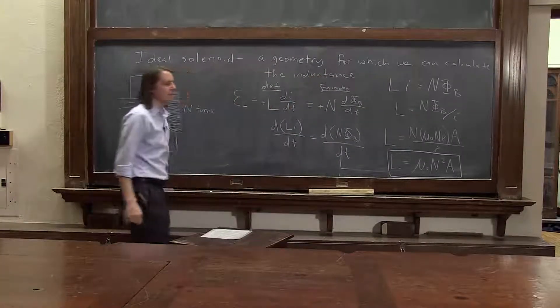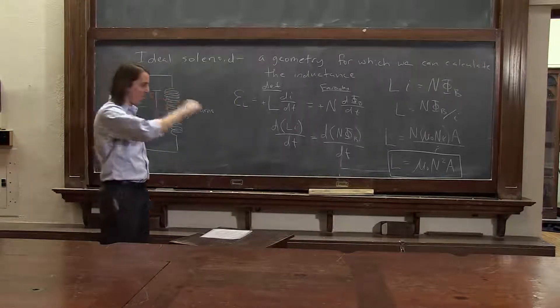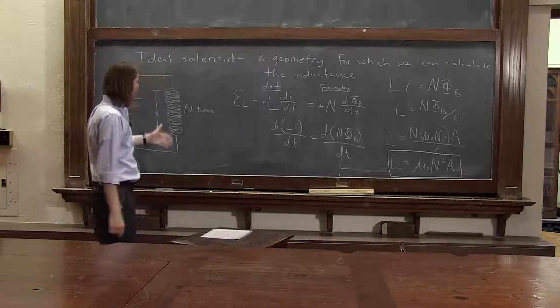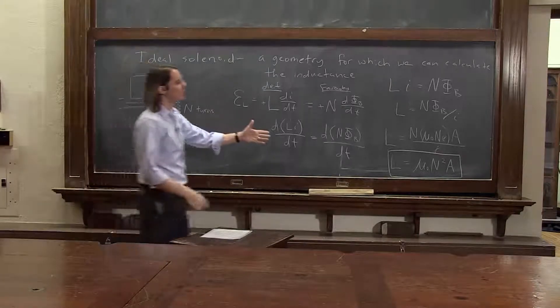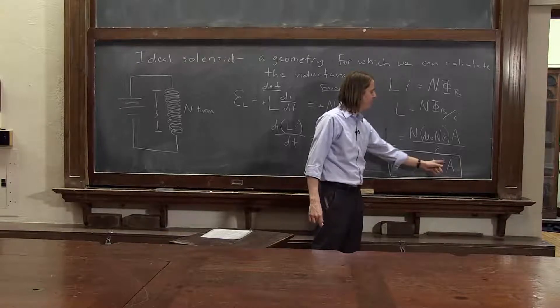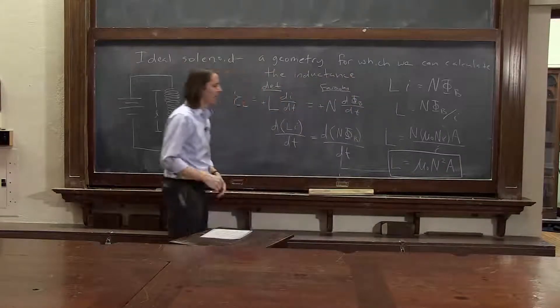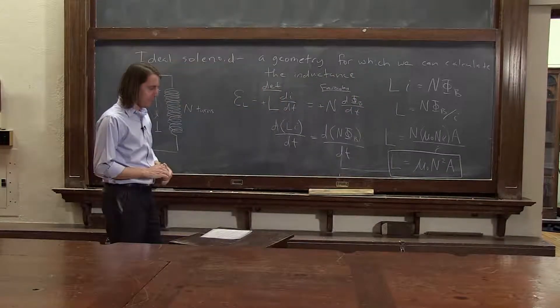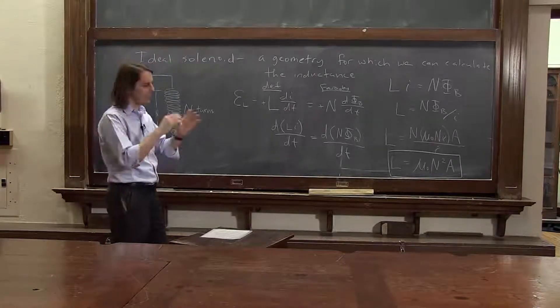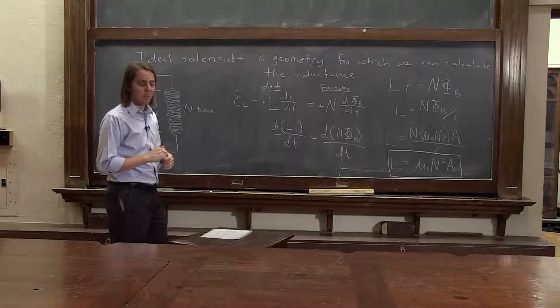So there you go. If you want to make a really big inductor, wrap it around a big area and put in a lot of turns and make it an ideal solenoid. And of course, these trends apply even if it's not an ideal solenoid. You still want a lot of turns. That helps you the most. And you want to wrap it on a fairly large area. So that's the one geometry where we can really calculate the inductance. Other geometries, the fringing fields make it much more complicated.